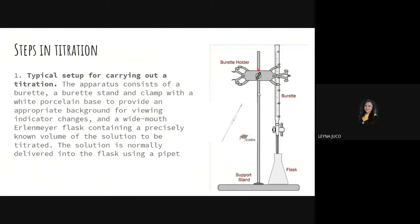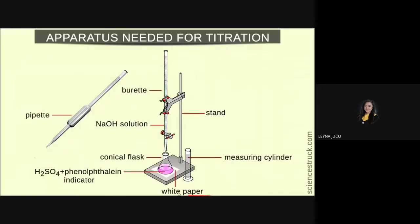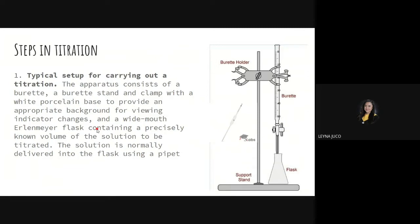You'll also need a burette stand and a clamp to hold the burette. You need a white porcelain base or white paper to provide an appropriate background for viewing indicator color changes — it must be visible immediately when color changes. A wide-mouthed Erlenmeyer or conical flask containing a precisely known volume of the solution to be titrated is needed, and the solution is normally delivered into the flask using a pipette. Familiarize yourself with this typical titration setup and the different apparatus used.